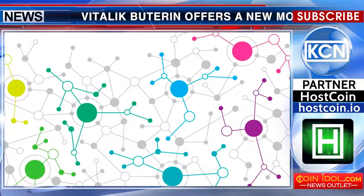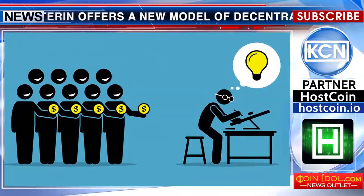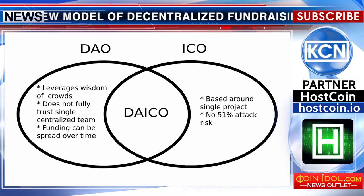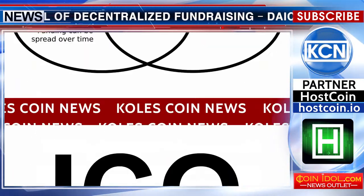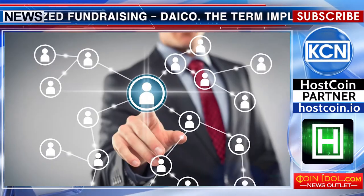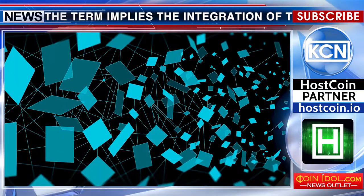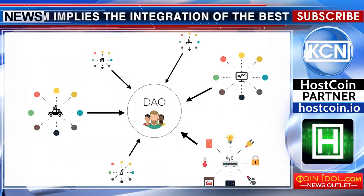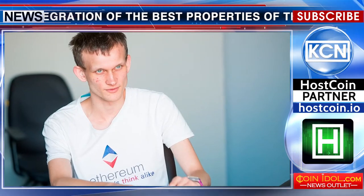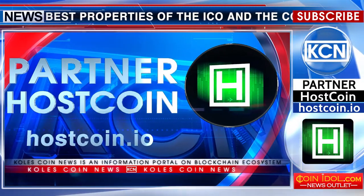Vitalik Buterin offers a new model of decentralized fundraising. The term implies the integration of the best properties of the ICO and the concept of decentralized autonomous organizations. Here is how he sees the essence of the idea of Buterin.